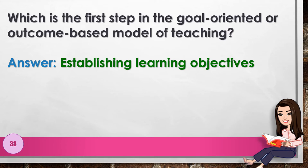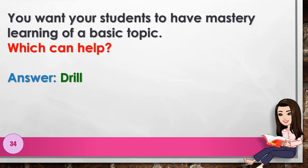Number 32: You use the gumamela, a complete flower, to teach the parts of a flower. Which method did you use? Answer: type study method. Number 33: Which is the first step in the goal-oriented or outcome-based model of teaching? Answer: establishing learning objectives. Number 34: You want your students to have mastery learning of a basic topic. Which can help? Answer: drill.